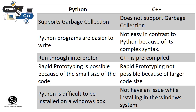One difference between Python and C++: Python supports garbage collection, while C++ also supports garbage collection but differently. Python programs are easy to write, while C++ has complex syntax. Python runs through an interpreter, whereas C++ is precompiled. Python also supports rapid prototyping.